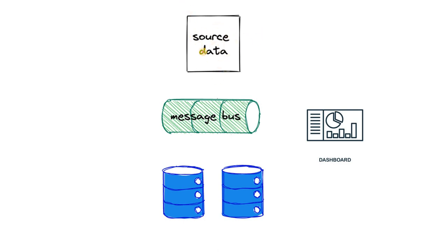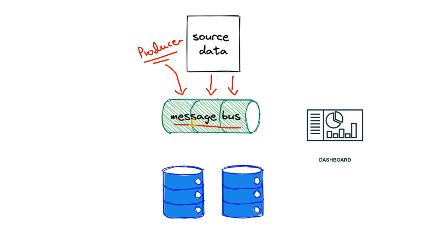So in our real project, we will be having some source system that is basically acting as a real-time source which will generate the data in real-time, and the producer will read the data from that real-time source and then write in a Kafka topic — that is basically denoted here with message bus. For this particular demo, we are not using any real-time source but rather we will generate some dummy data in real-time and publish in the Kafka topic which will act as a real-time source system.